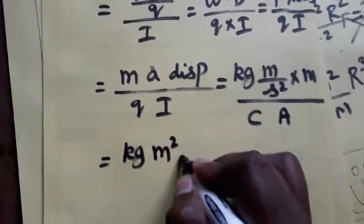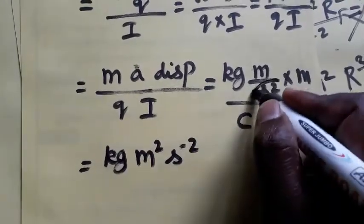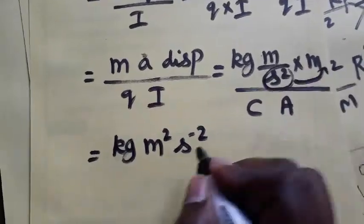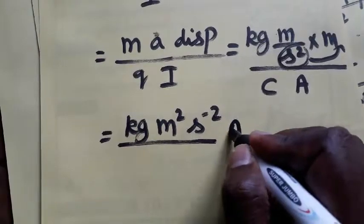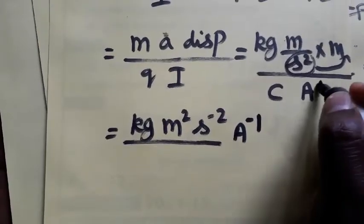So kg, meter square, second minus 2, this second square I am taking as a numerator, I got second minus 2. And ampere also I am taking, so ampere inverse I got, here plus 1 is there.